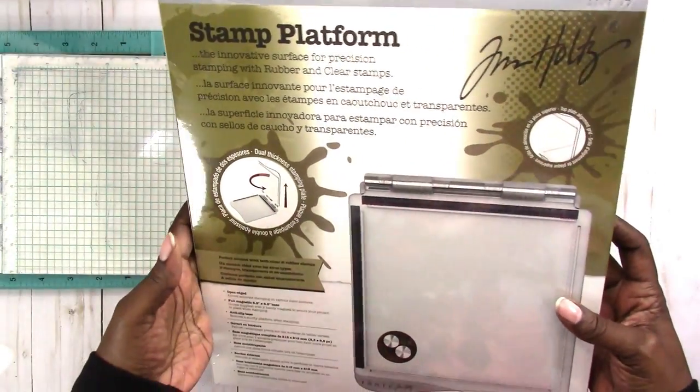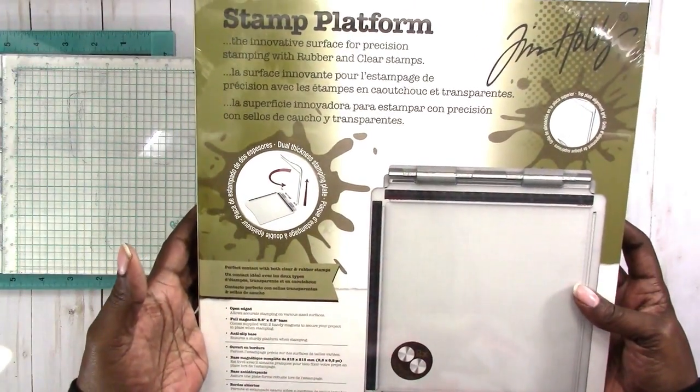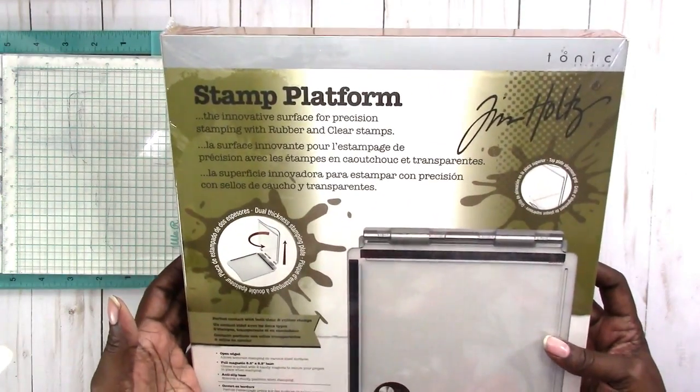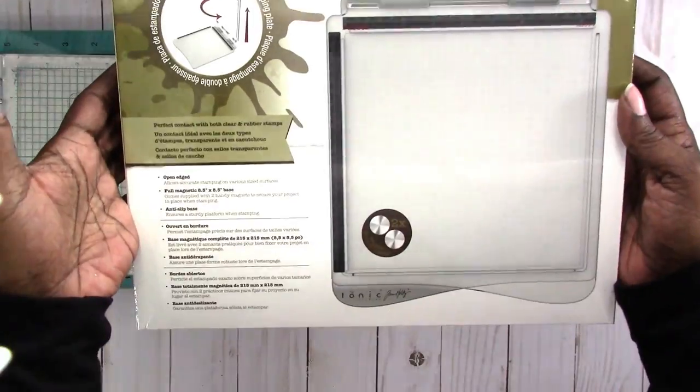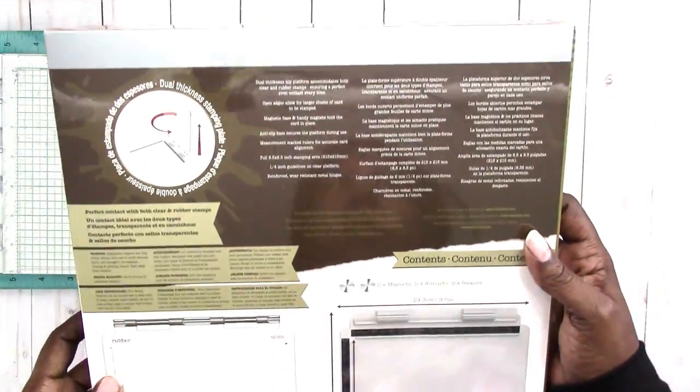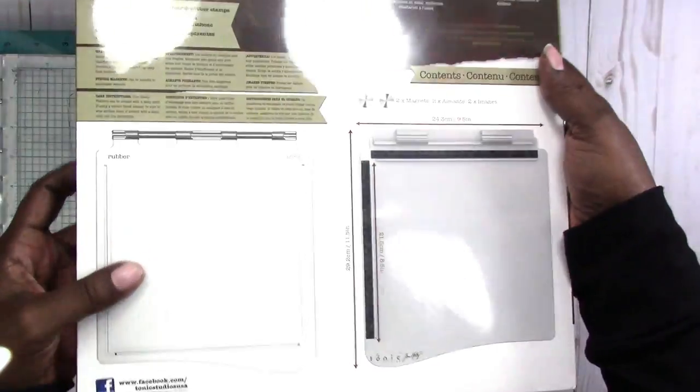But it did well enough for what I needed it to do, because I'm not big into stamping and card making like that. I was just using it for stamping my planner stuff. And I'm still learning when it comes to stamping. But since I got so many questions and I was referring people to this, I went ahead and picked up the Tim Holtz stamp platform. See, here I haven't taken it out of the box. This is what it looks like. I don't know anything about it, so we're gonna open it up together and test it out together.